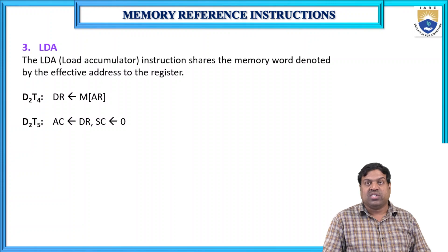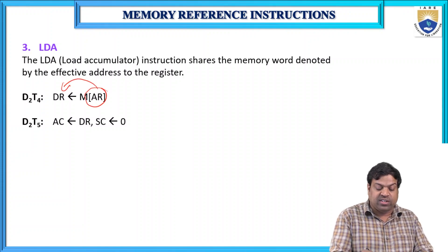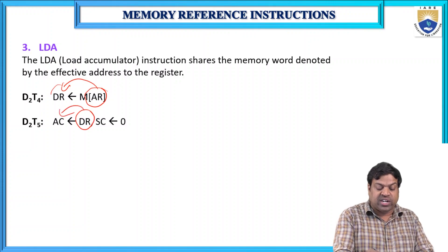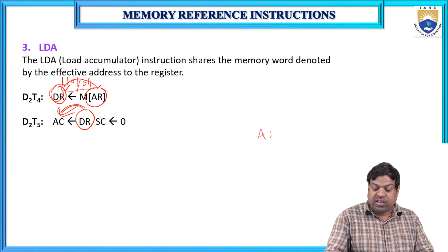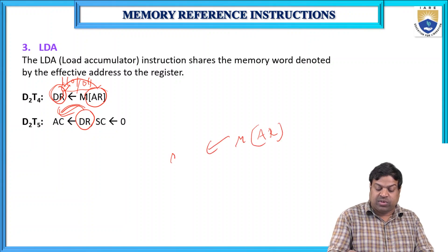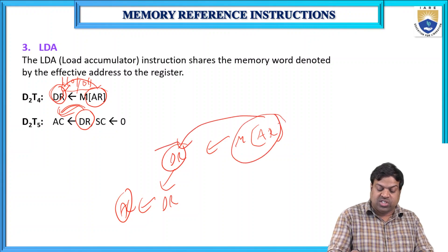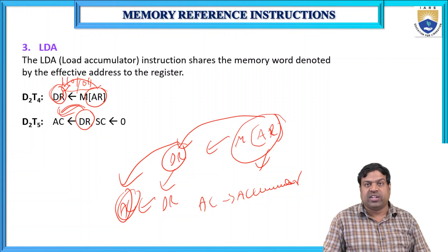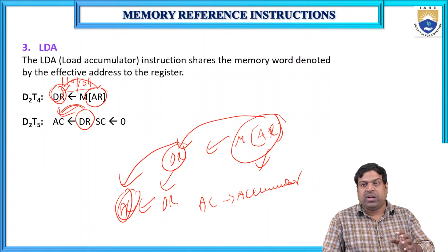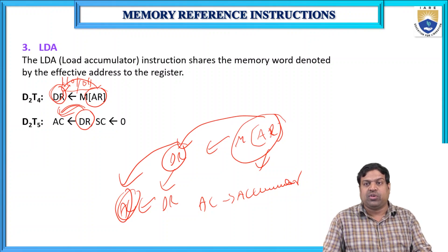LDA (Load Accumulator) loads the memory word at the effective address into the accumulator. First, M[AR] → DR: the data at the memory address register is moved to the data register. Then DR → AC: the data register contents are transferred to the accumulator. So the value stored at address M[AR] is ultimately loaded into the accumulator.